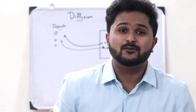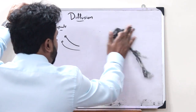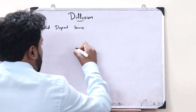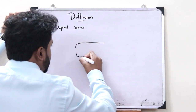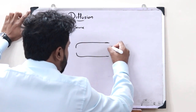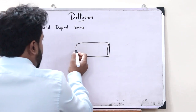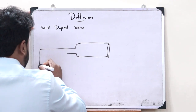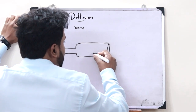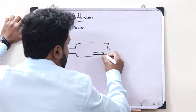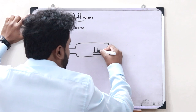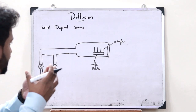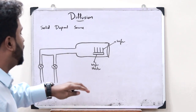What are these three types of diffusion? First, let us see the diffusion from a solid dopant source. For this, first we would have a quartz diffusion tube like this. This tube is now connected to certain inlets like this. And here, there is a particular wafer holder like this. On top of this particular wafer holder, we place the different wafers like this.